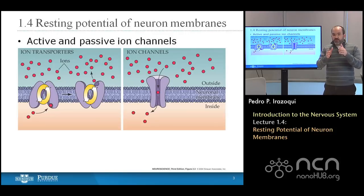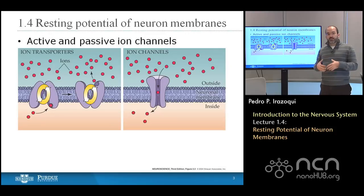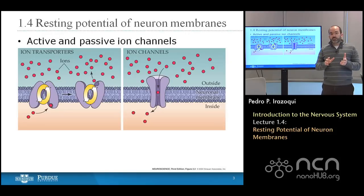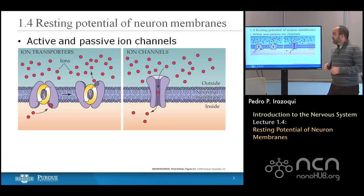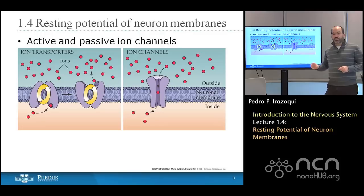An ion channel can be selective or non-selective. If it's selective to potassium, then when it's open, only potassium ions can flow through it, and when it's closed, nothing flows through it. If it's not selective, then when it's open, potassium, sodium, calcium — all sorts of different ions present either outside or inside the cell — can flow through it. It can also be partially selective, allowing, for example, sodium or potassium but not calcium. The selectivity varies from selective to non-selective and everything in between. Ion transporters are selective, and they establish very specific concentration gradients.